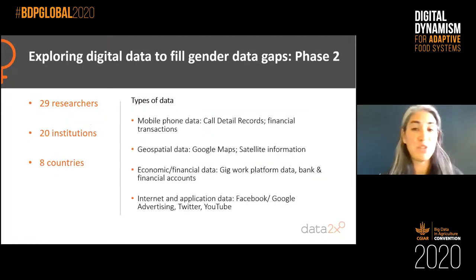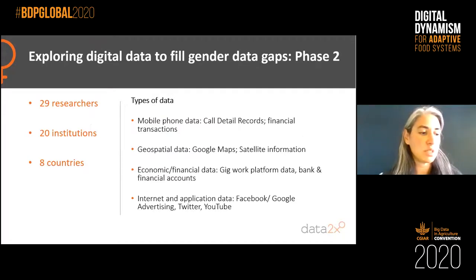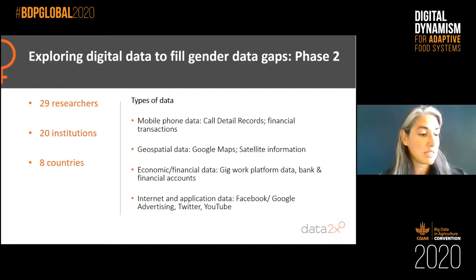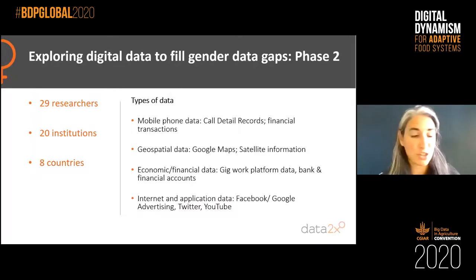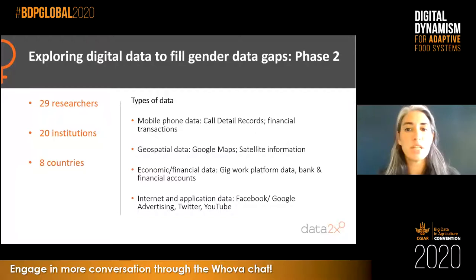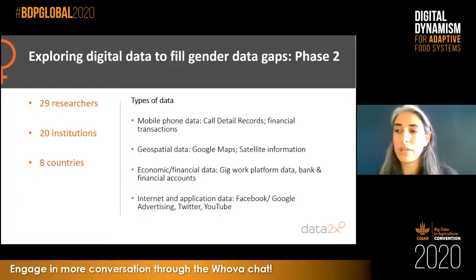We found four promising applications for geospatial, credit card, mobile phone, and social media data. Once we confirmed that big data had significant potential for filling gender data gaps, we launched a second phase of research beginning in 2017. The purpose was to find applications that were ready to scale, so we put out a challenge to researchers all over the world and asked people to submit rigorous, multi-stakeholder projects that could provide insights for gender equality and could be feasibly replicated at a national scale.